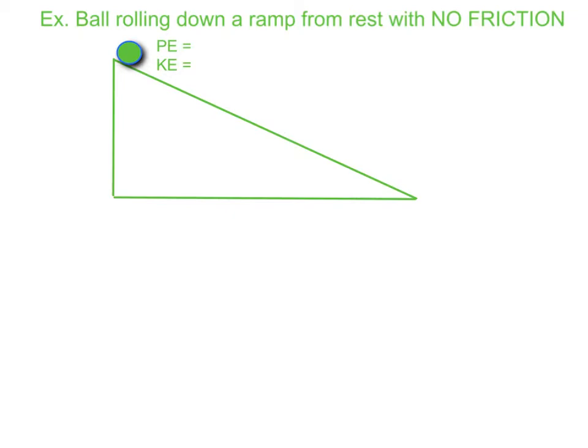Let's take a look at this example. We have a ball rolling down a ramp from rest with no friction. Because it's starting from rest, we can say that the kinetic energy at the top is zero and the potential energy at the top, let's give it some arbitrary number, let's say a thousand joules.